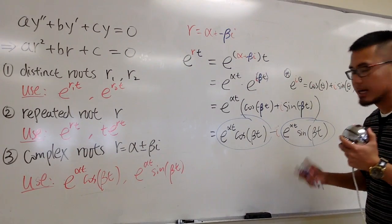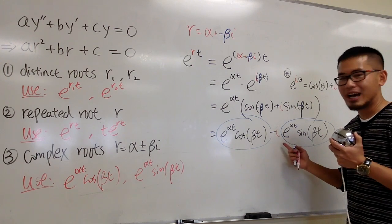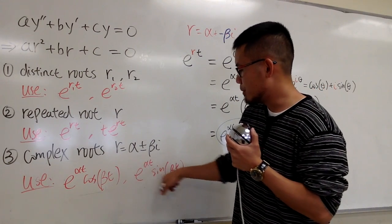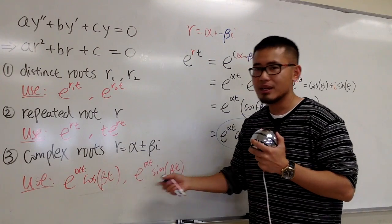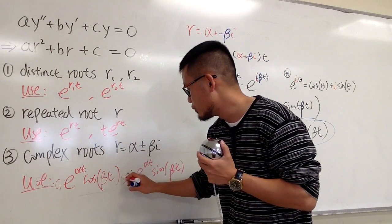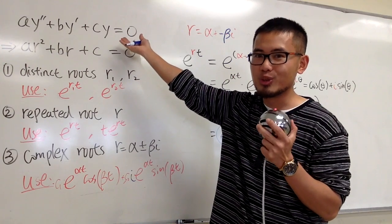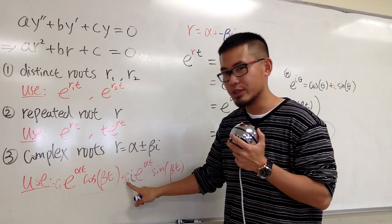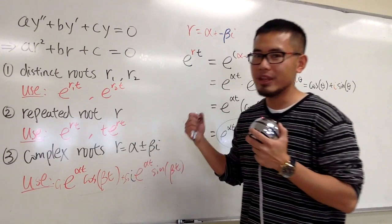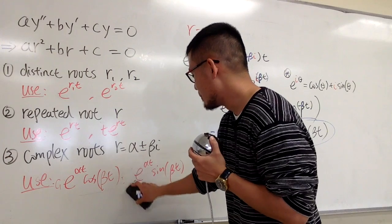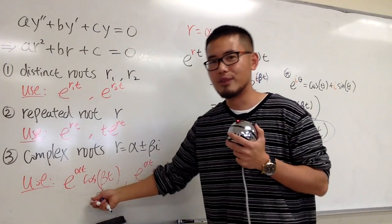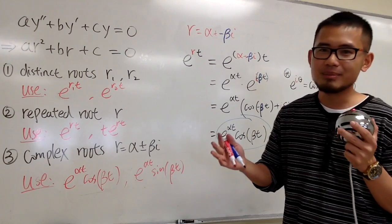You may be wondering why I didn't include i in the building blocks. If you want to include i next to the sine term, that's okay. But remember, once you include i, your constant c2 will also be a complex value, so that when you multiply and add everything together to construct the general solution, you end up with a real number anyway. That's why you don't need to worry about i.